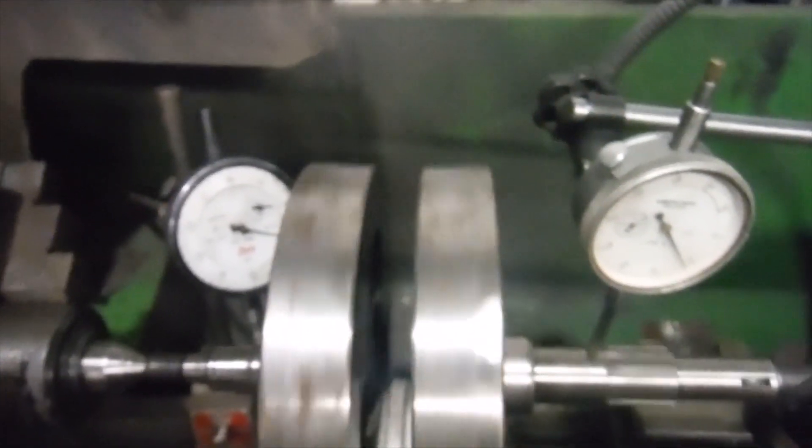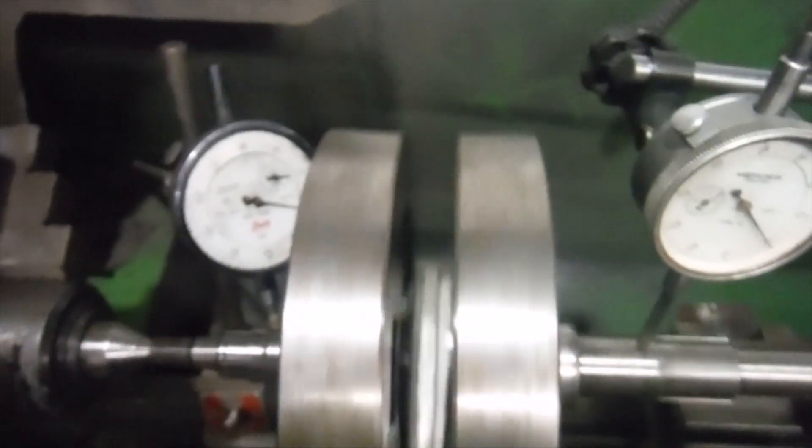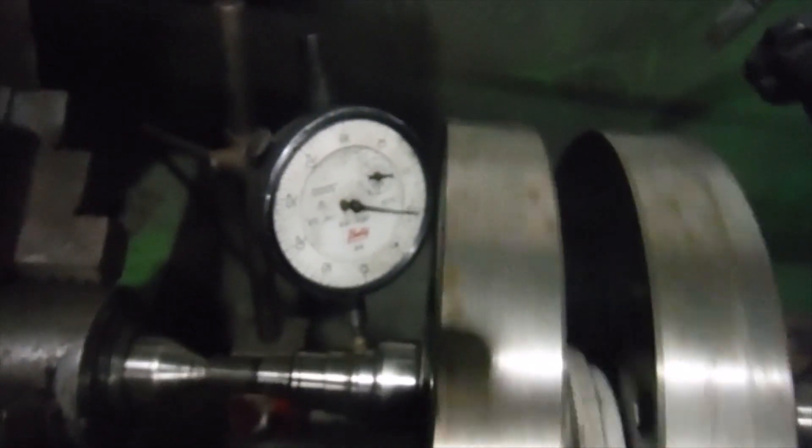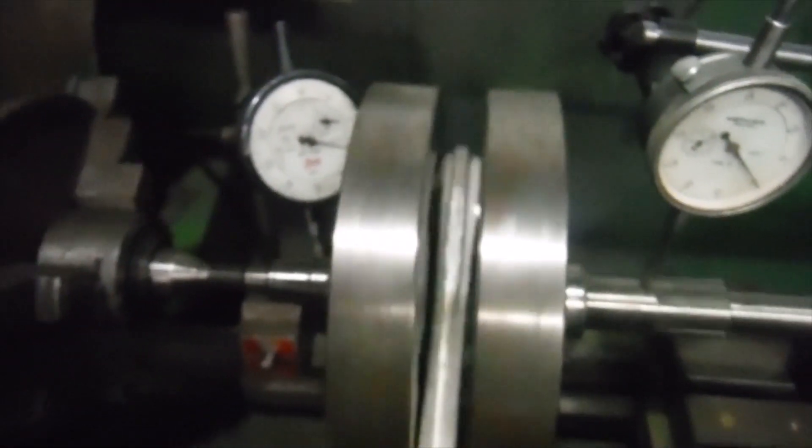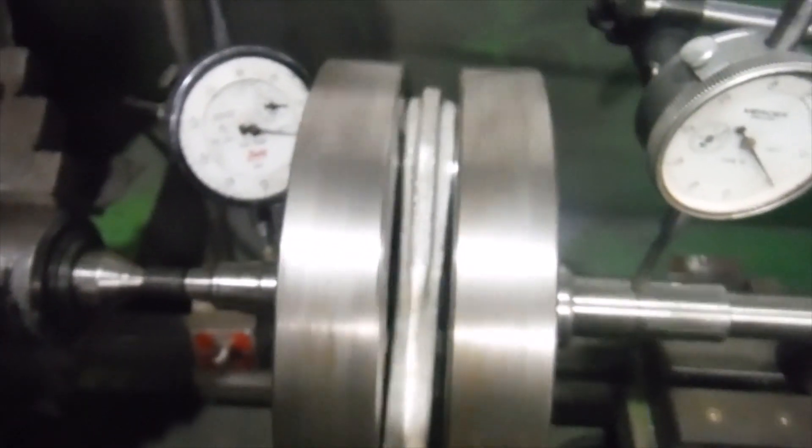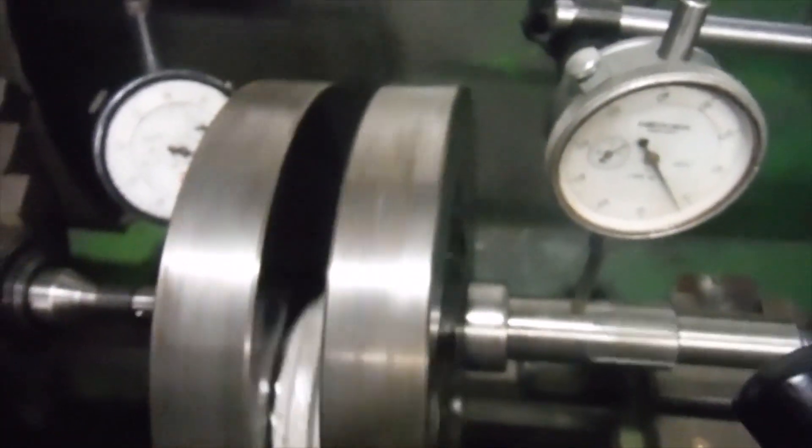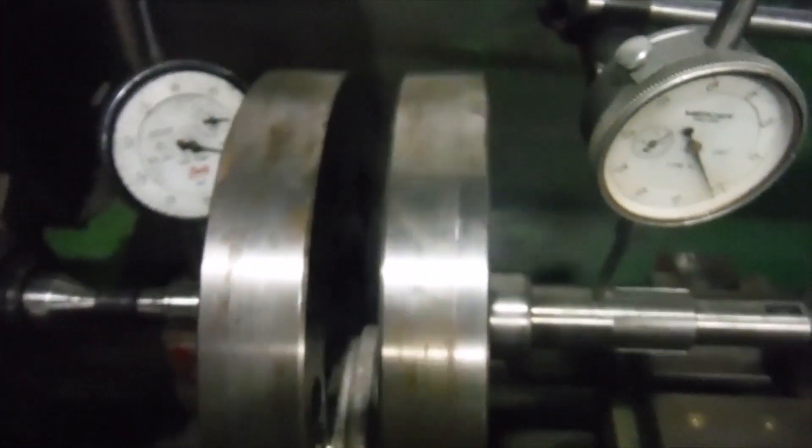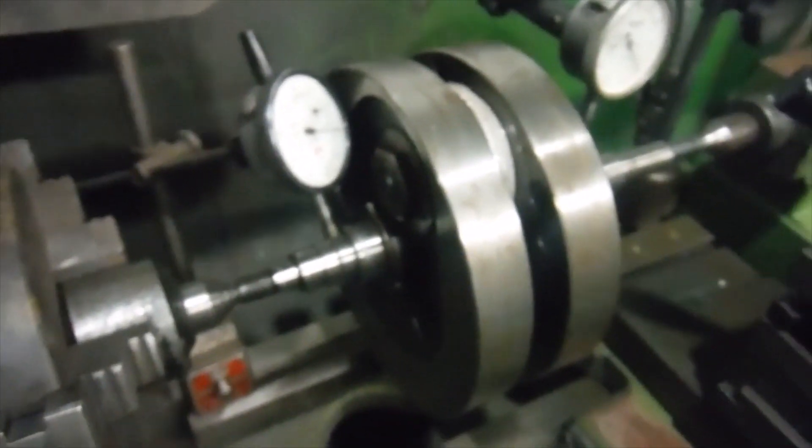This one is fluctuating by two and a half thousandths of an inch. The good news is the needles are now moving up and down in unison altogether, so I can effectively cancel one out against the other. I'm going to take the one thousandth of an inch there and offset that against the two and a half thousandths there to give me an actual running in the main bearings run out of one and a half thousandths of an inch. That's a very worthwhile reduction over the four thou or so run out that we had before.